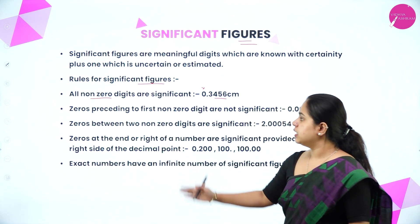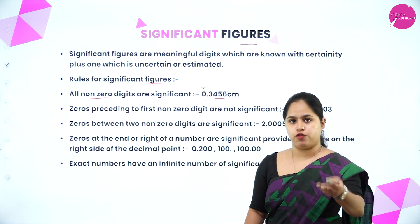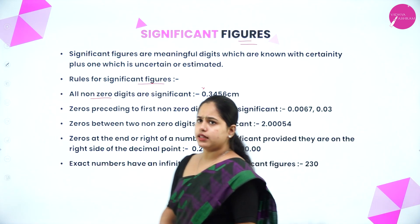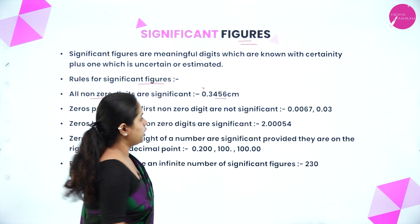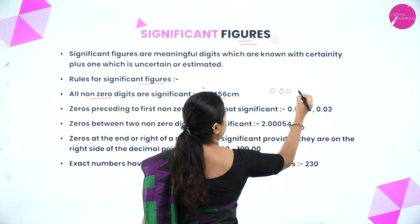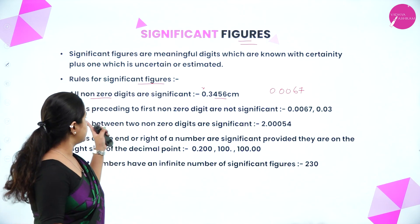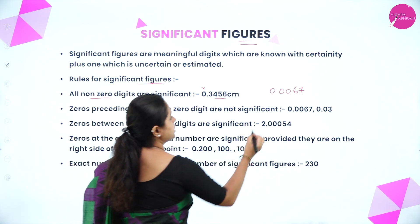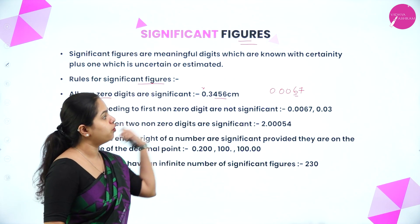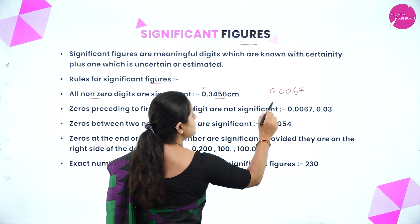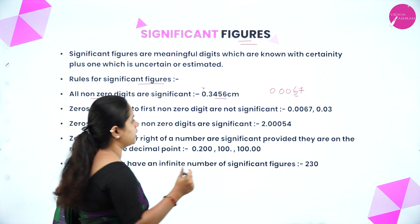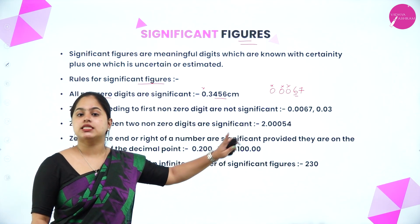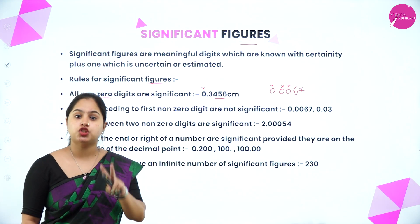Rule 2: Zeros preceding the first non-zero digit are not significant. For example, in 0.0067, the first non-zero digit is 6. The zeros before 6 — three zeros — are not significant. Only 6 and 7 are significant, giving two significant figures.